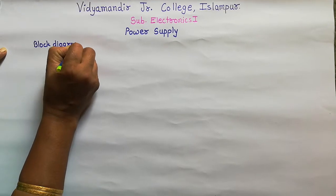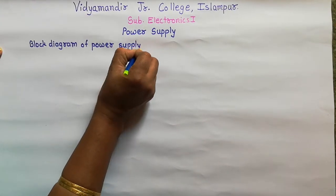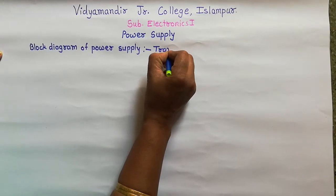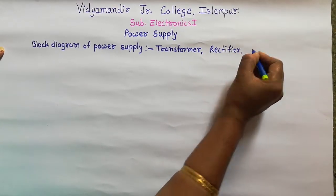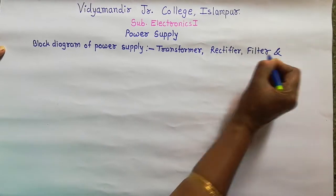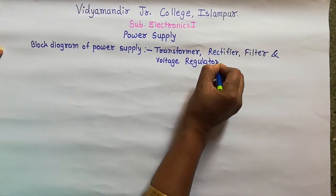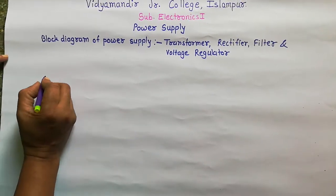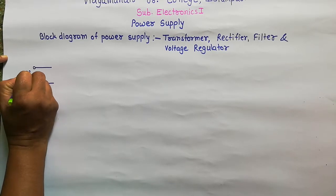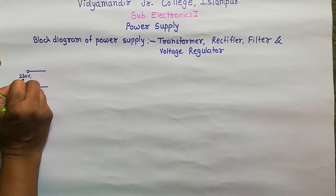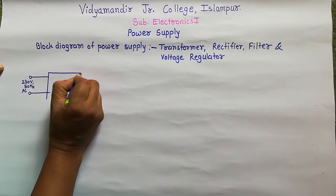Now we draw the block diagram of power supply. In the block diagram, or construction of power supply, it consists of a transformer, a rectifier, filter, and voltage regulator. The input to a power supply is AC mains supply, that is 230 volts 50 Hz AC, which is given to the primary of the transformer.